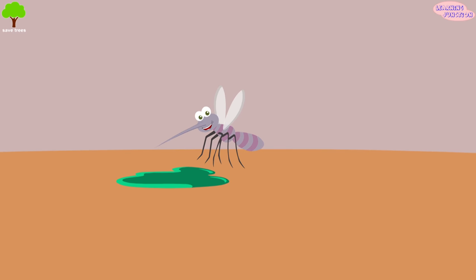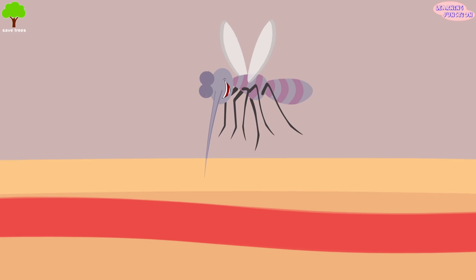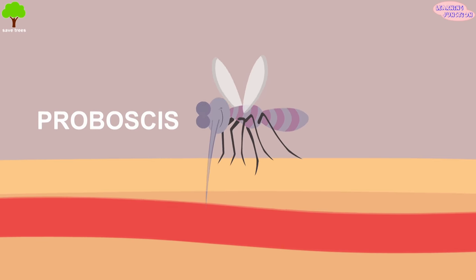This is so powerful that it makes the area numb. Then it puts the straw-like part of its mouth deep into skin. This part is called the proboscis.